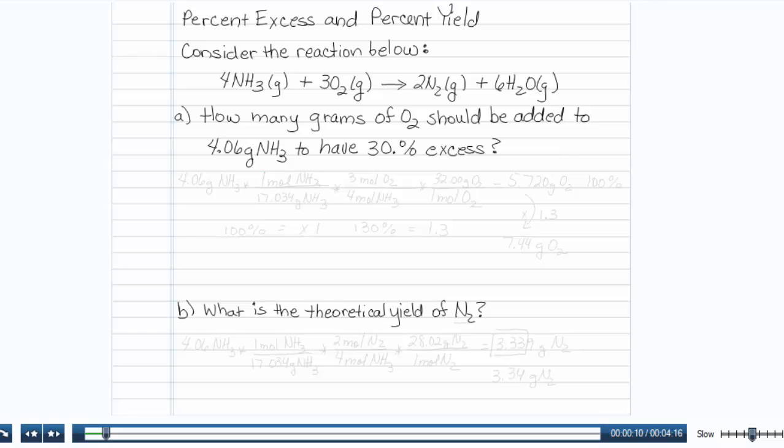4 ammonia plus 3 oxygen yield 2 nitrogen plus 6 water. Part A says how many grams of oxygen should be added to 4.06 grams of ammonia to have a 30 percent excess.